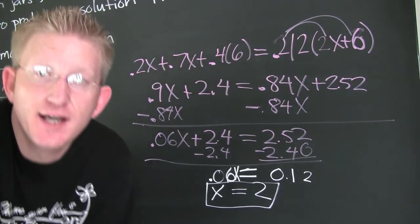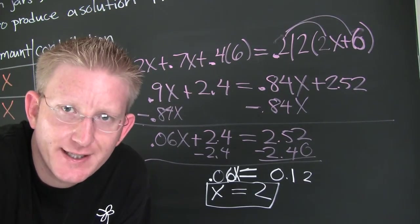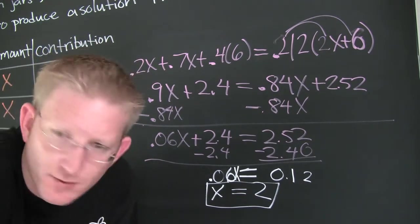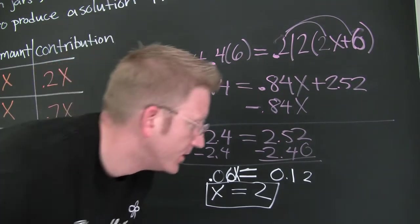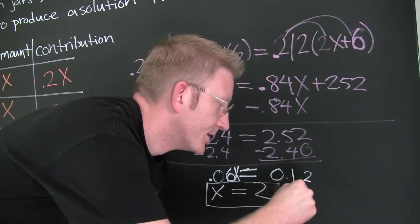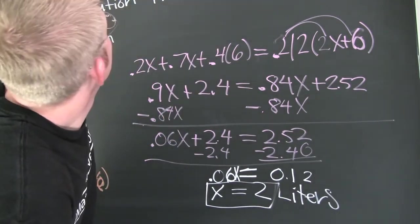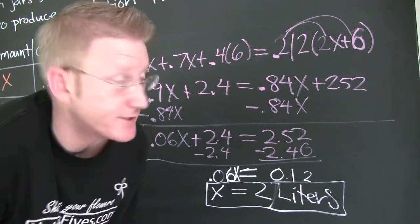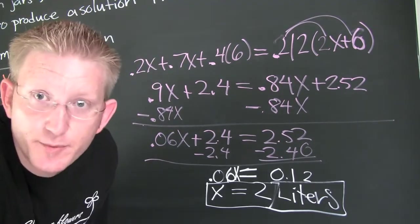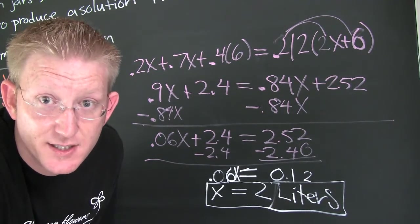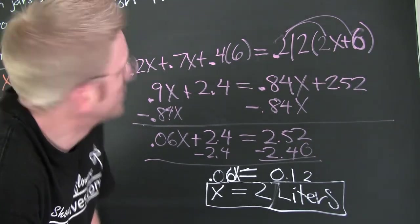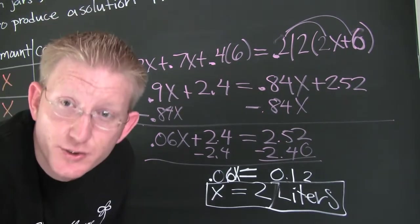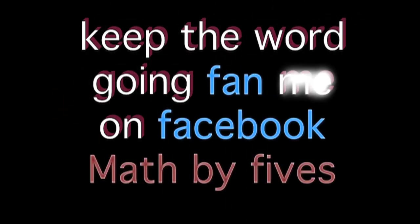But what was X? X was the amount from A and B. They were in equal amounts. So we need 2 what? What was this measured in? Liters. 2 liters of the 20% solution and 2 liters of the 70% solution to be mixed with 6 liters of the 40% solution to make a solution that is 42% HCL. That's pretty good. So good. Well done.